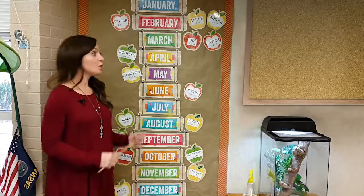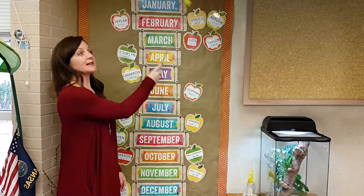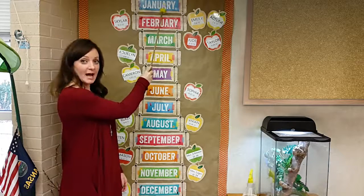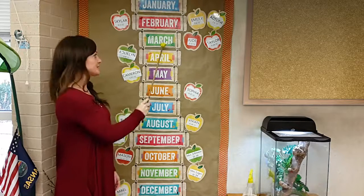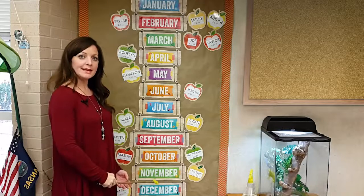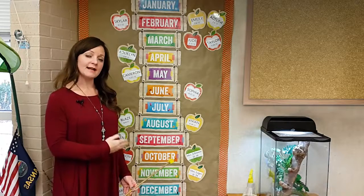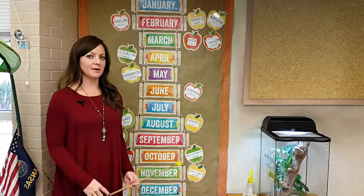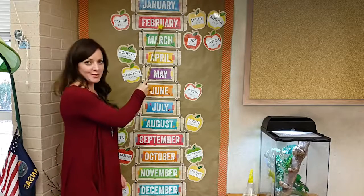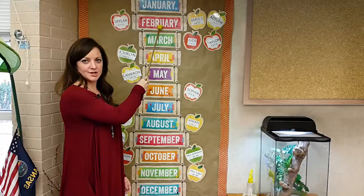For example, we're currently in the month of January. So when we begin our song, all of the kids will clap on January. We'll sing the rest of the song all the way through. Now when we celebrate the end of January and the beginning of February, the students will clap when February is introduced in the song.